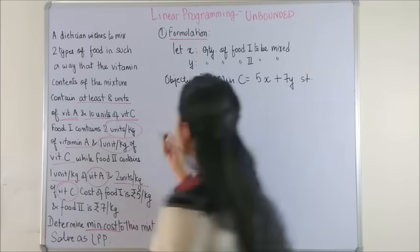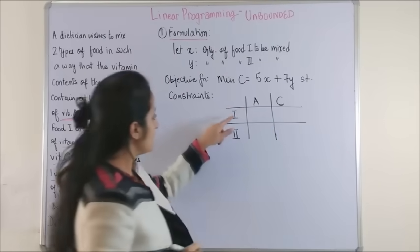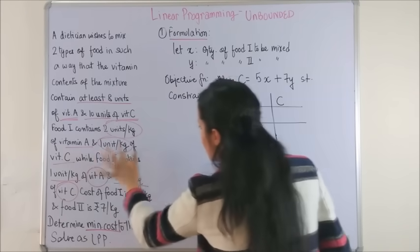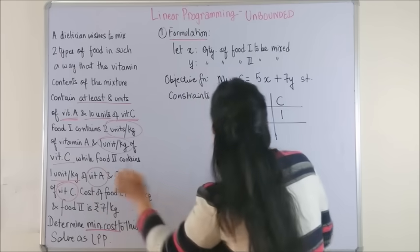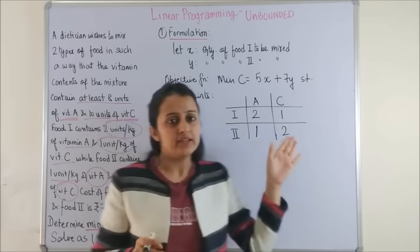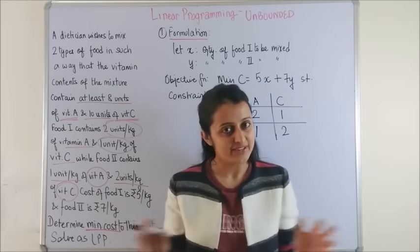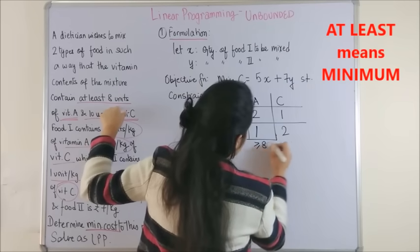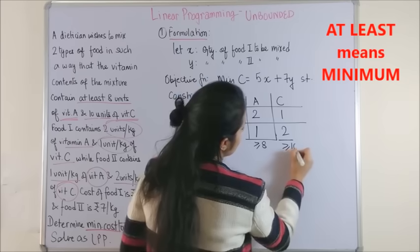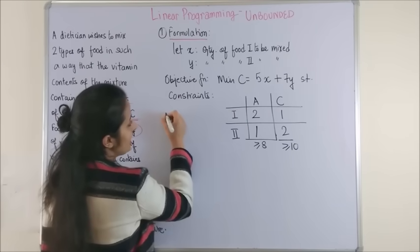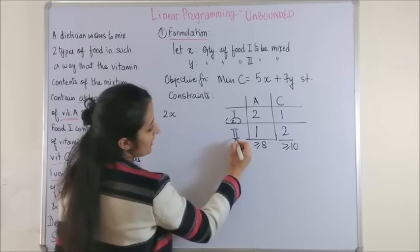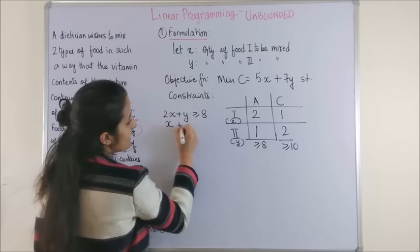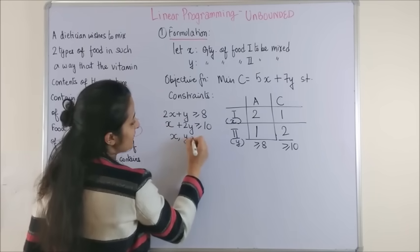Subject to the constraints: food one contains two units per kg of vitamin A and one unit per kg of vitamin C, and food two contains one unit of vitamin A and two units of vitamin C. I am making that midway table. This step is completely optional. You can write the constraints straight away. For vitamin A, it says the contents contain at least 8 units of vitamin A and at least 10 units of vitamin C. So once we have this, the constraints simply become 2x plus y is greater than or equal to 8. Next, x plus 2y is greater than or equal to 10, and x, y is greater than or equal to 0.